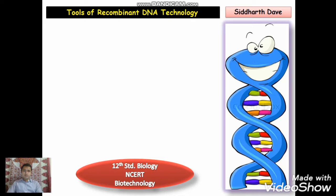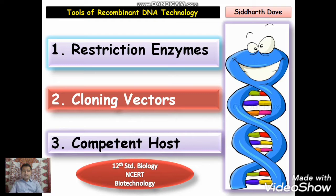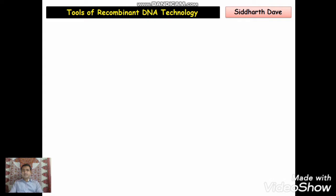There are generally three tools of recombinant DNA technology. The first tool is restriction enzymes, the second tool is the cloning vectors, and the third tool is the competent host. In this video, we are going to discuss about the restriction enzyme, that is the first tool.